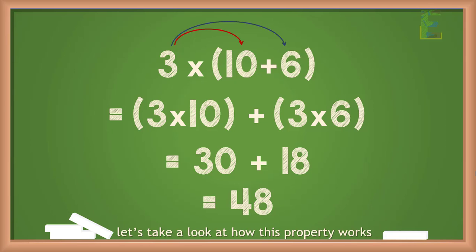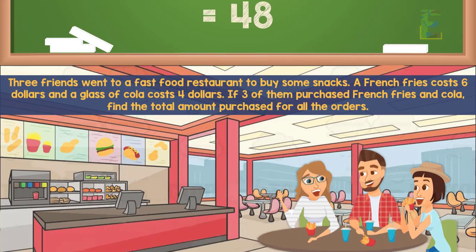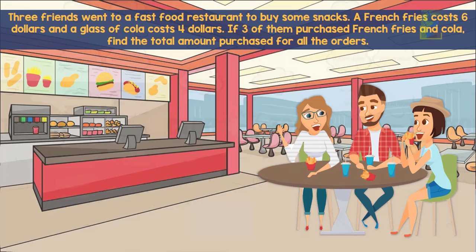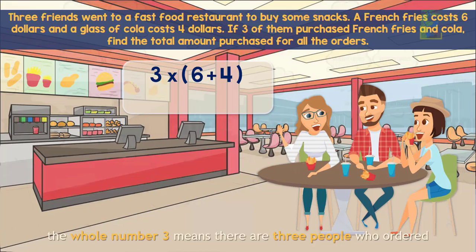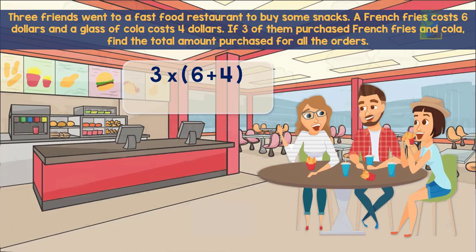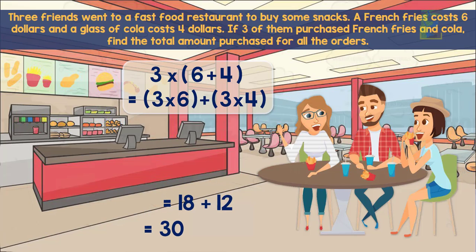Let's look at how this property works with a more visual example. Three friends went to a fast food restaurant to buy snacks. French fries cost $6 and a glass of cola costs $4. If all 3 friends purchase french fries and cola, what is the total amount for all orders? We can write the numerical expression as 3 times (6 plus 4). Using the distributive property, we distribute the 3 to each member: 3 times 6 plus 3 times 4. The result is $30, so the total amount of all orders is $30.